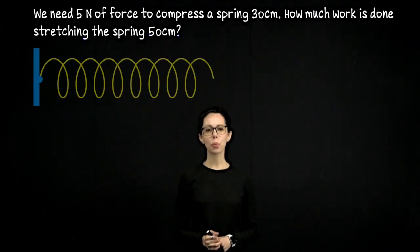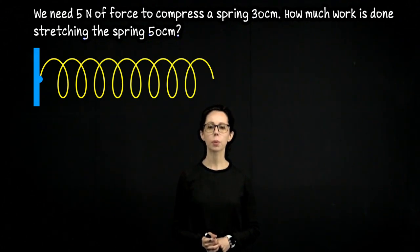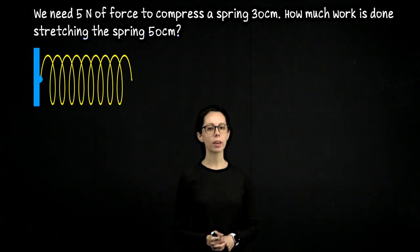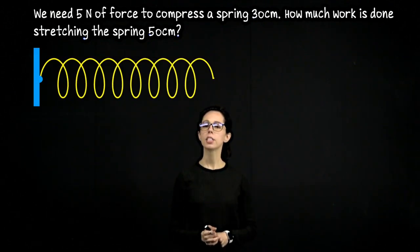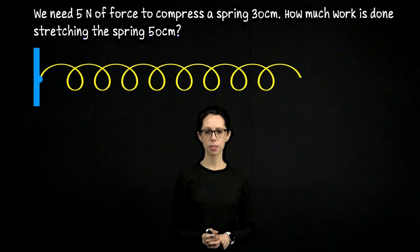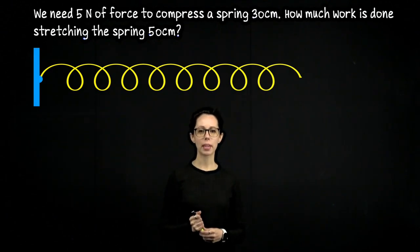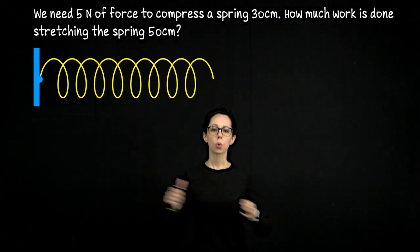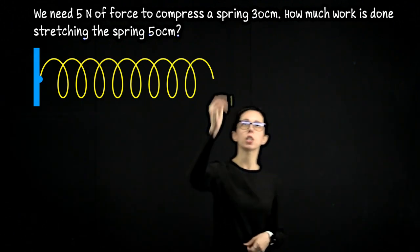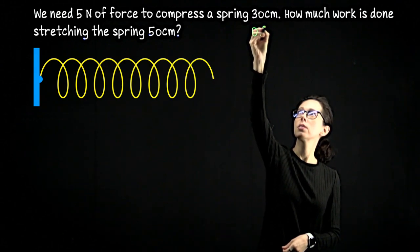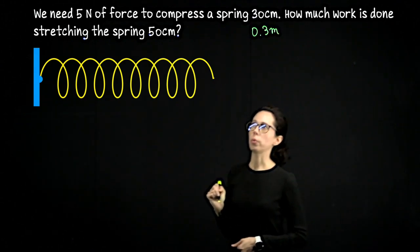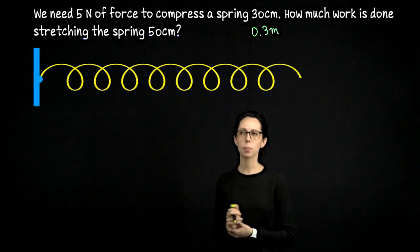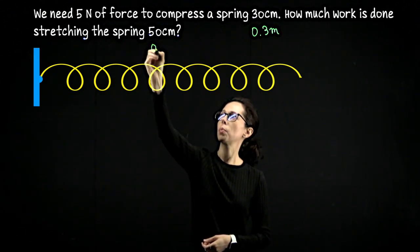In this example, we are told that we need five newtons of force to compress a spring 30 centimeters. With that information, can we determine how much work is done stretching the spring 50 centimeters? We want to work with our standard SI units, newton for force, joules for work. So where we have 30 centimeters, we'll change that to 0.3 meters. And when we stretch our spring from equilibrium outwards, instead of calling that 50 centimeters, we will call that 0.5 meters.